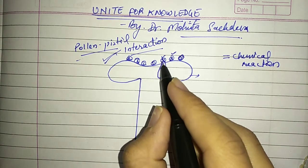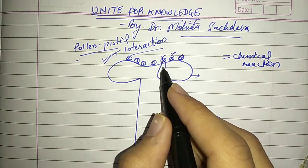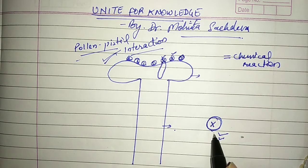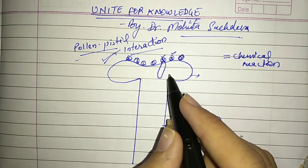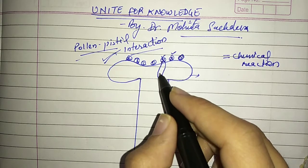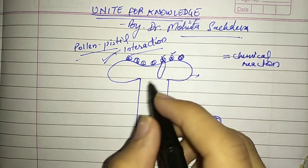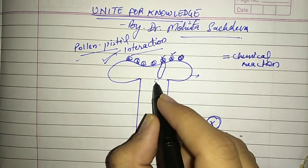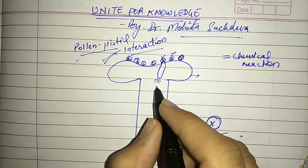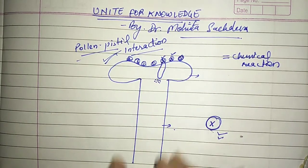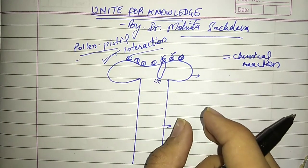Here, whichever is compatible, whichever belongs to the same species, only that one's pollen tube will grow further. The pollen tube will form here and will grow further. How will the pollen tube grow?